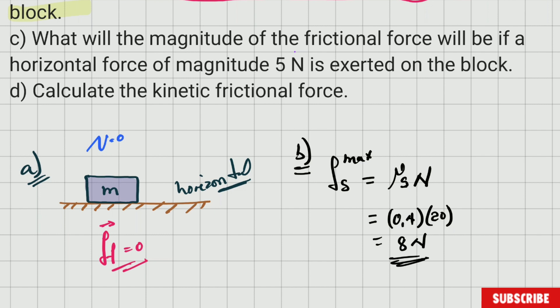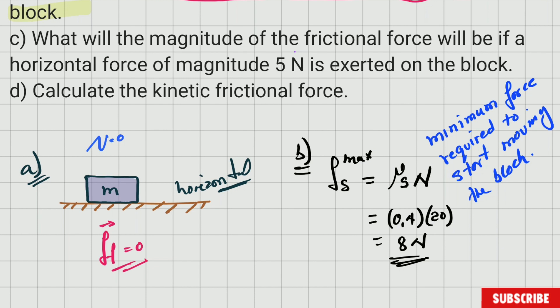So 0.4 × 20 = 8 Newtons. That means you need 8 Newtons to start moving that block. If the force is less than 8 Newtons, the block will not move and the frictional force equals the applied force. The maximum static frictional force is the minimum force required to start moving the block — this is very important for the exam.